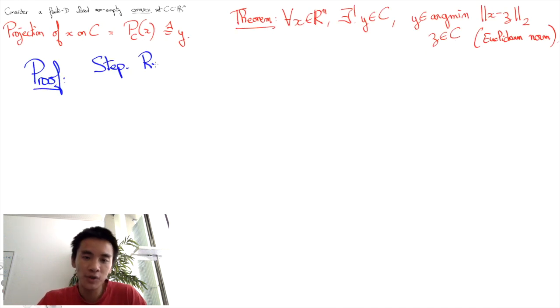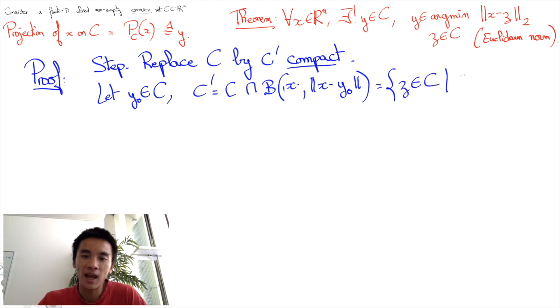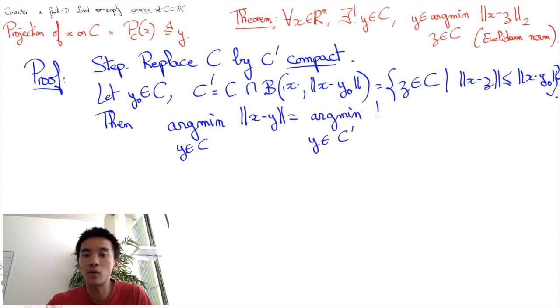Let's prove this theorem. First consider any point Y0 in C and define C' to be the intersection between C and the ball centered around X and of radius X minus Y0. Importantly C' is still non-empty and convex and the minimizer over C' will necessarily be the same as the minimizer over C.